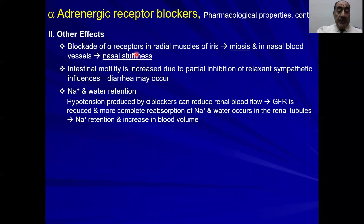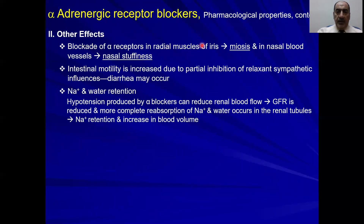Regarding other effects: on the level of the eye, the sympathetic nervous system activates the dilator pupillae muscle causing mydriasis. If you block these alpha receptors in the dilator pupillae muscle, it will be inhibited and miosis will occur. Also, blood vessels in the nose are normally constricted by the sympathetic nervous system; if you inhibit their alpha receptors, this will cause nasal congestion or stuffiness.